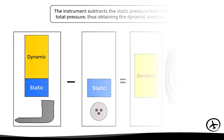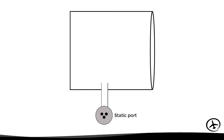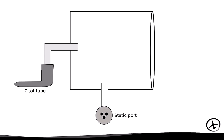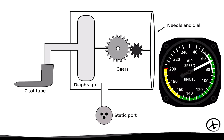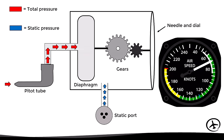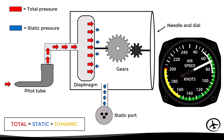Looking inside the instrument, we have the static port and pitot tube connections. The static port is directly connected to the inside of the case, while the pitot tube is connected to a diaphragm which in turn is connected to gears that allow the needle to move in the dial. The static port allows the whole case to be filled with static pressure, while the pitot tube causes the diaphragm to fill with total pressure. The total pressure inside the diaphragm tries to expand it while the static pressure in the case tries to contract it.